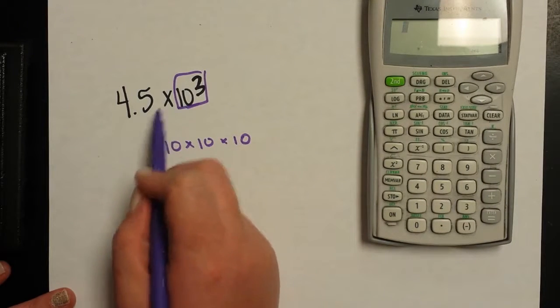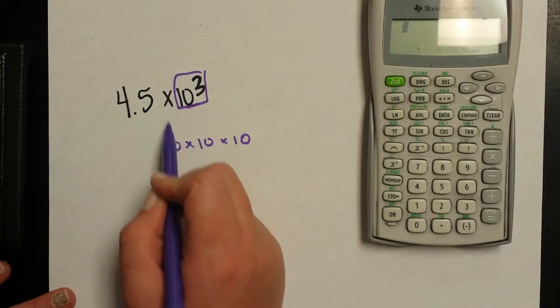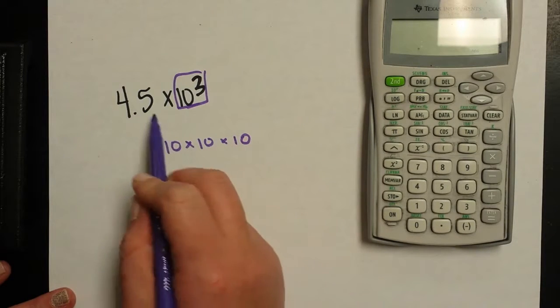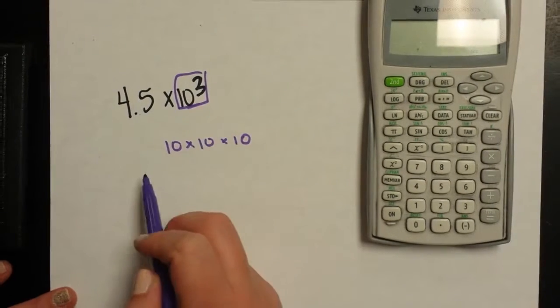If I'm multiplying by that, that means I'm multiplying my coefficient, or in this case, 4.5 times 10 times 10 times 10. So I'm multiplying 4.5 by 10 that many times.